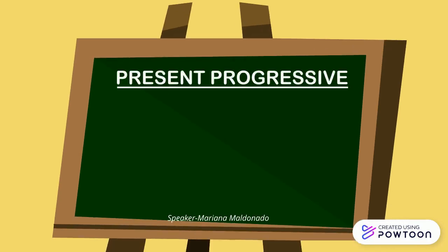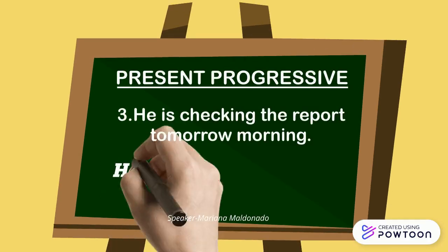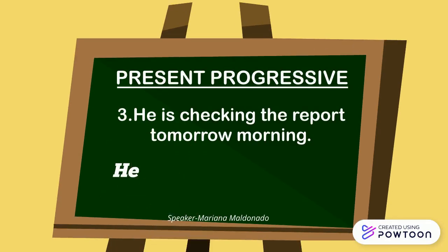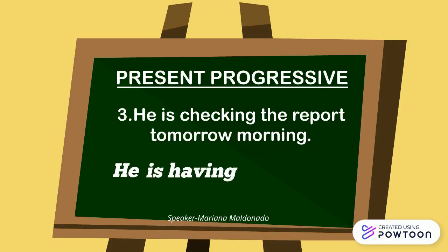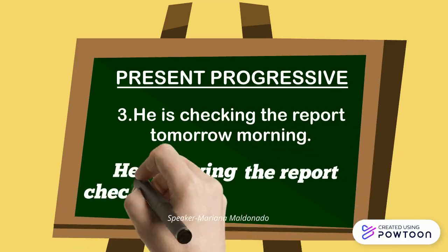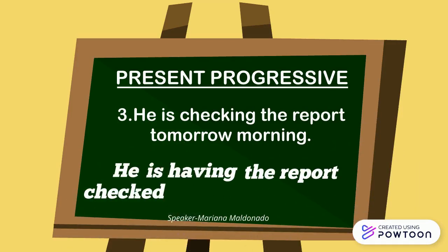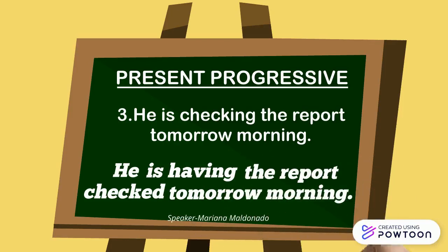In this example, we place the subject at the beginning, then we transform the verb 'have' into the present progressive and place the object of the sentence, which is 'the report'. The main verb we change to the past participle and the rest of the sentence remains in the same place.